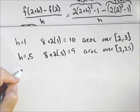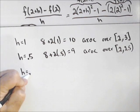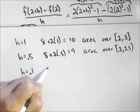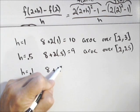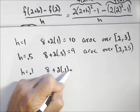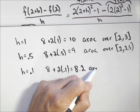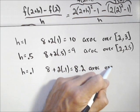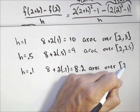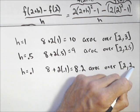Continuing on with this, h equals 0.1. So, we get 8 plus 2 times 0.1, which equals 8.2, and that's the average rate of change over 2 to 2.1.